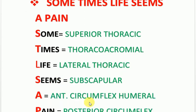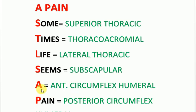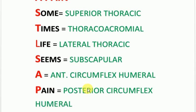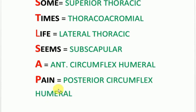'A' stands for the anterior circumflex humeral artery, and 'pain' stands for the posterior circumflex humeral artery.